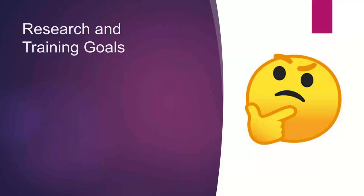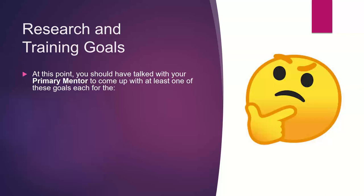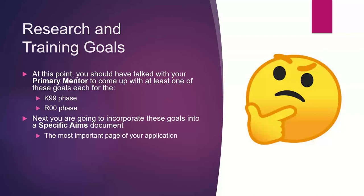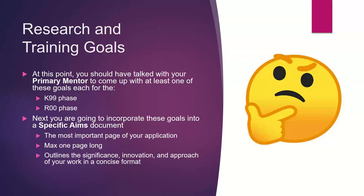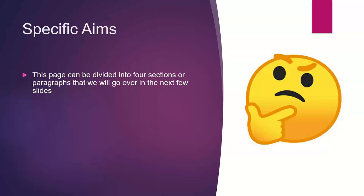First, research and training goals. At this point you should have talked with your primary mentor to come up with at least one goal each for the K99 phase and the R00 phase. You're going to incorporate these goals into your specific aims document, which is the most important page of your application and is maximum one page long. Don't worry about the page limit too much when writing drafts. This section outlines the significance, innovation, and approach of your work in a concise format, and explains what the positive outcomes of your grant will be if it is funded.